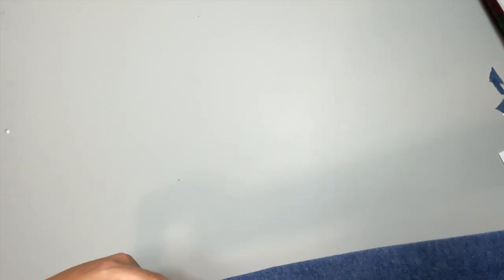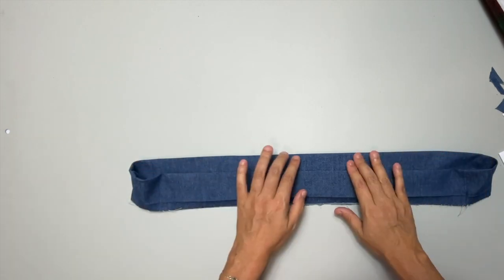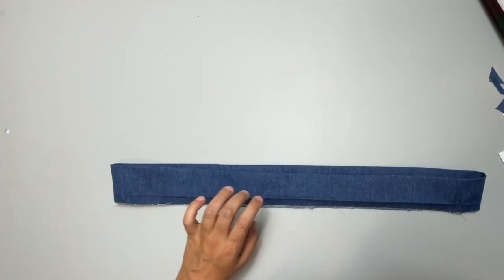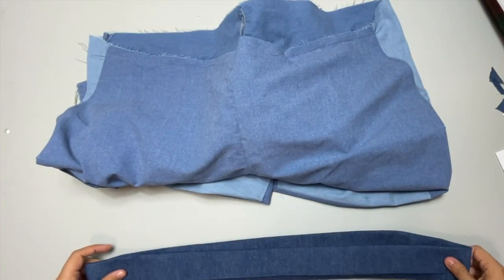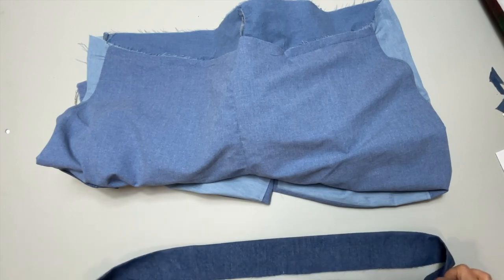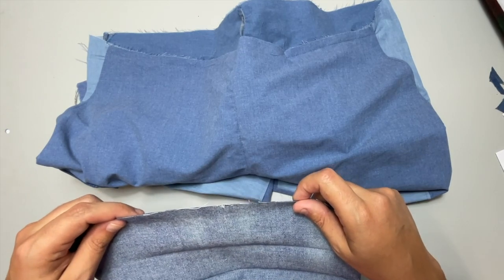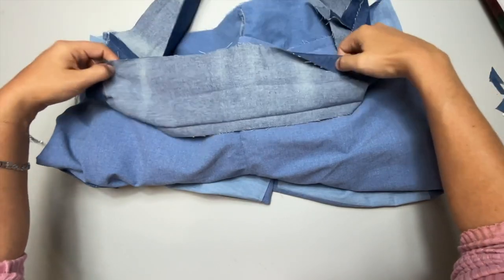We've got the back facing me and the front is facing the table. And we are going to sew the waistband to our pants, right sides together. So again, I've got the front, right sides together, like so.